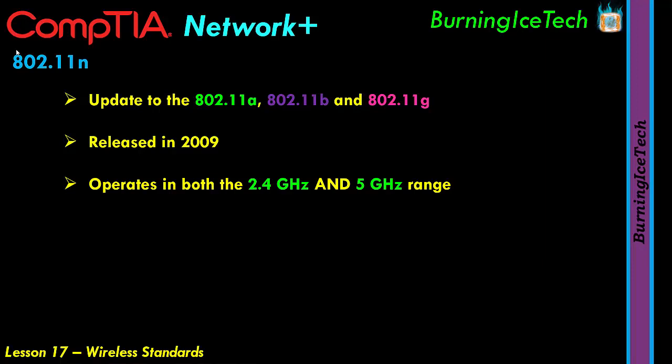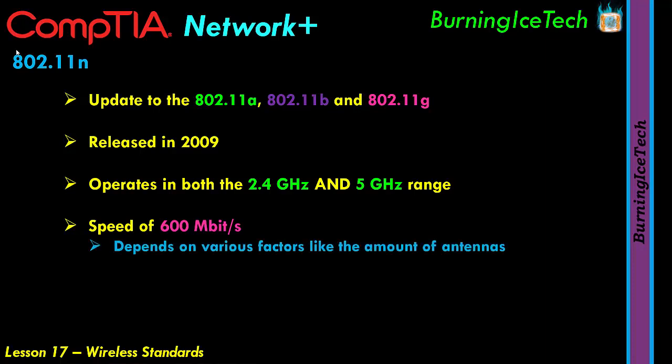There is a difference in speed: 5 GHz allows much faster speeds than 2.4 GHz. Speeds can be up to 600 Mbps, though whether you actually achieve that depends on several factors, including the number of antennas. Each antenna gives you another 150 Mbps, so to reach 600 Mbps you need to be on 5 GHz and have up to four antennas.